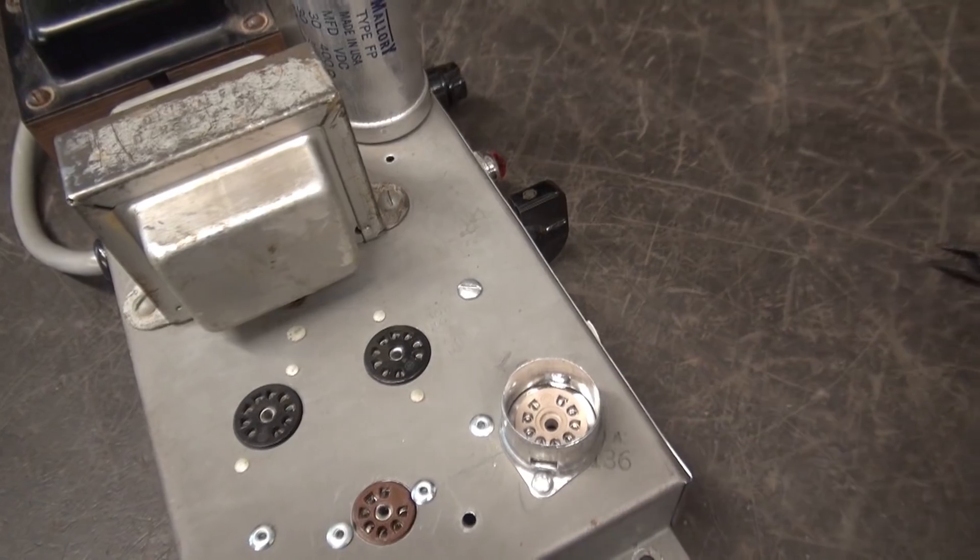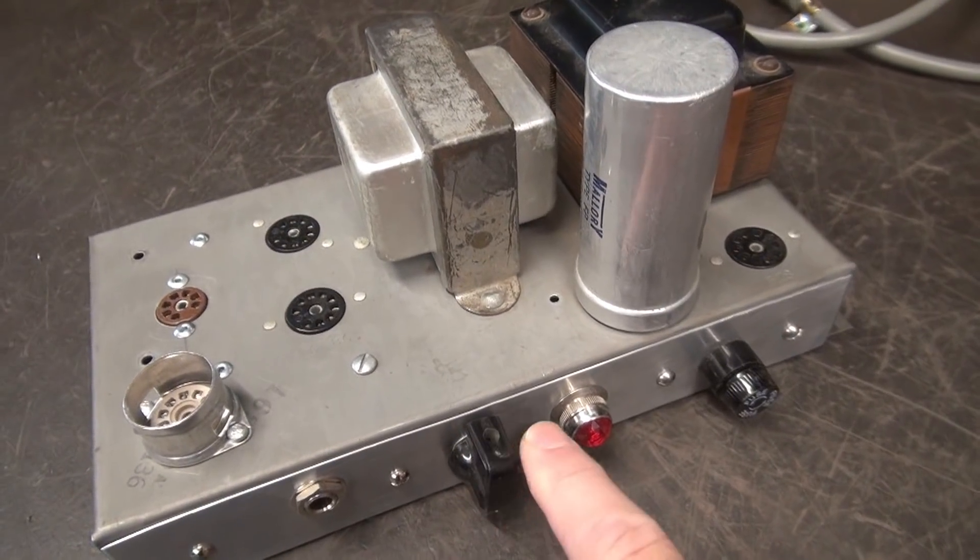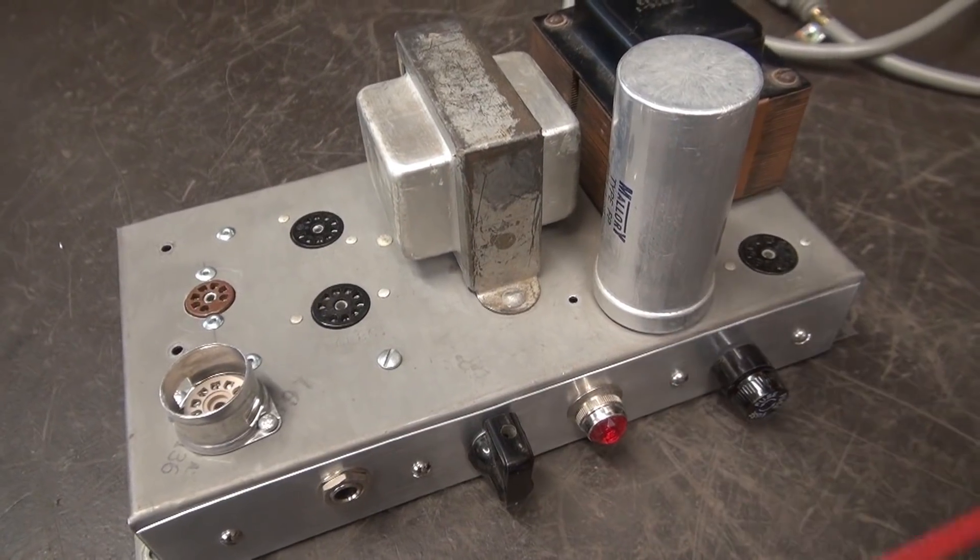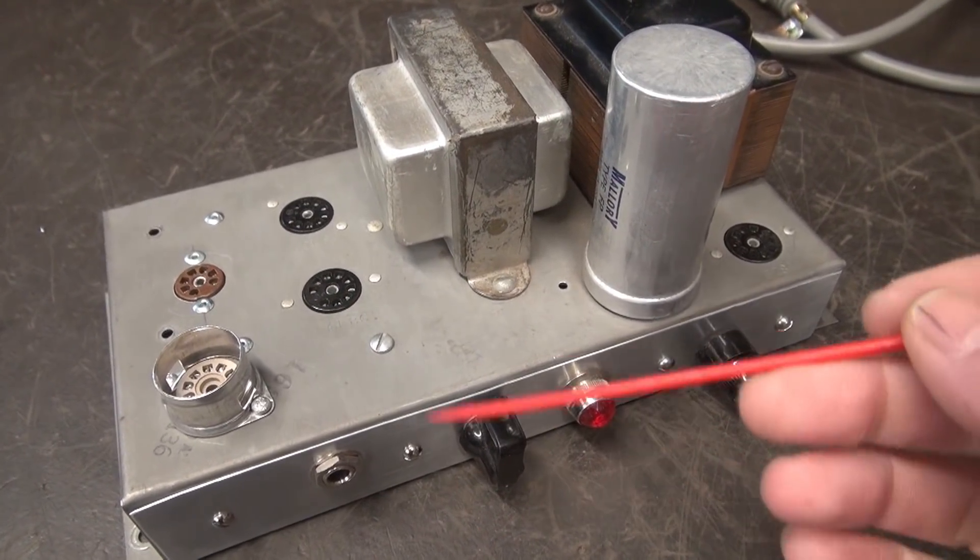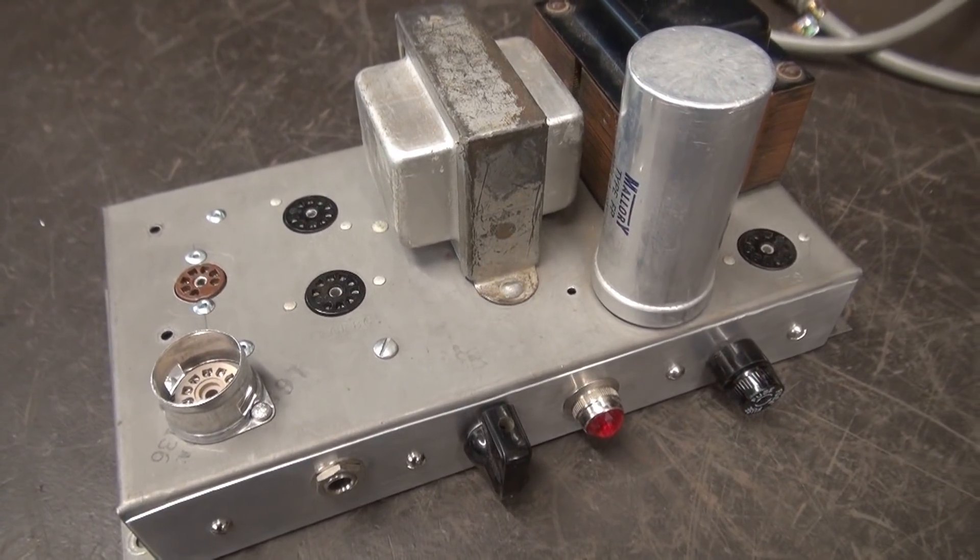We may have to adjust the gain on the 12AX7 because all we have is a volume pot. So there's a chance that without the tone pots, we may have too high of a signal. So I might have to kind of throttle that back.